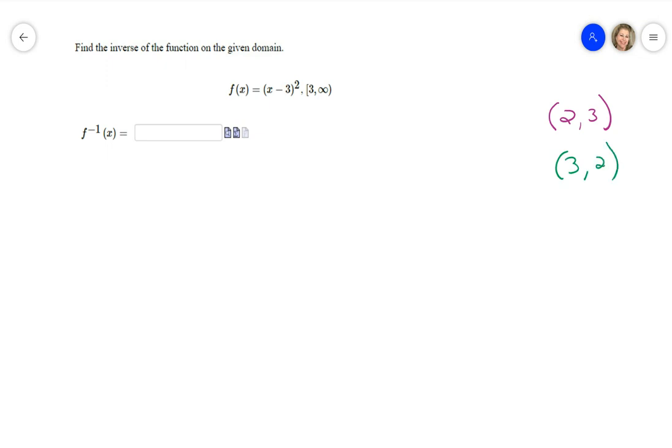So I know that they're saying that f(x) equals (x-3)² but what you start with is putting the Y where f(x) is, and then you switch - you put X where the Y is and Y where the X is.